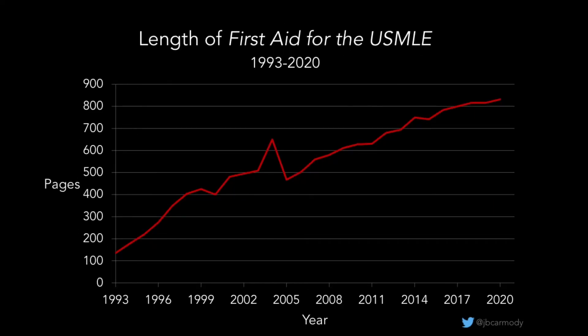In the era of Step 1 mania, First Aid for the USMLE grew from a modest 136-page review book to an over 800-page tome that students were advised to memorize word-for-word as the bare minimum amount of test prep. Since we decided that we should choose our future otolaryngologists based on their immediate factual recall of viral strand sense or G-protein subunits, students were stuck. They spent more and more time learning material that was less and less useful to their future patients because they were engaged in an arms race with their future colleagues that had no natural end.